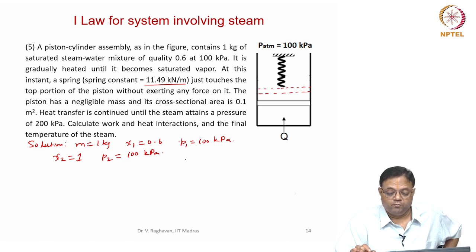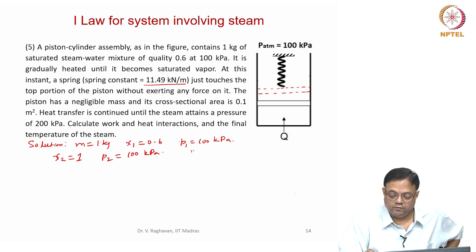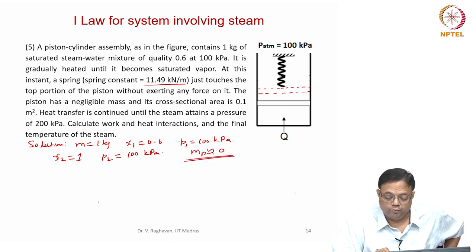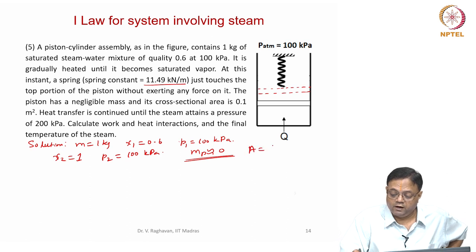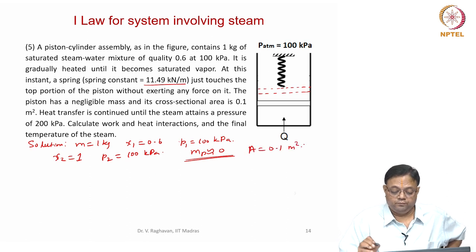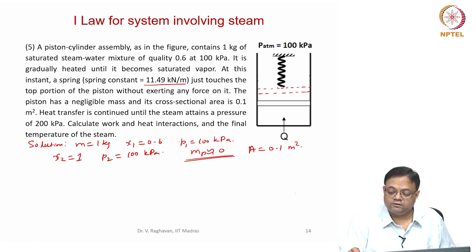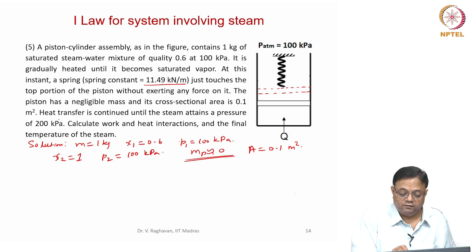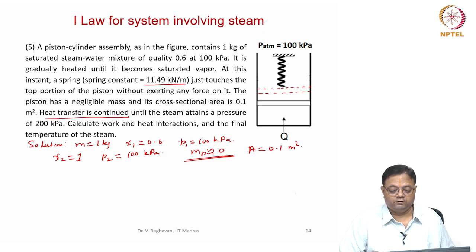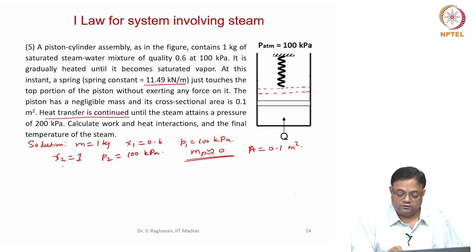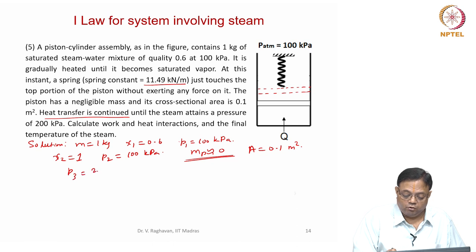The piston has negligible mass, so mass of the piston is approximately zero, and its cross sectional area is 0.1 meter square. After the spring just touches the top portion, the heating is continued until the steam attains the pressure P3 equal to 200 kilopascals.